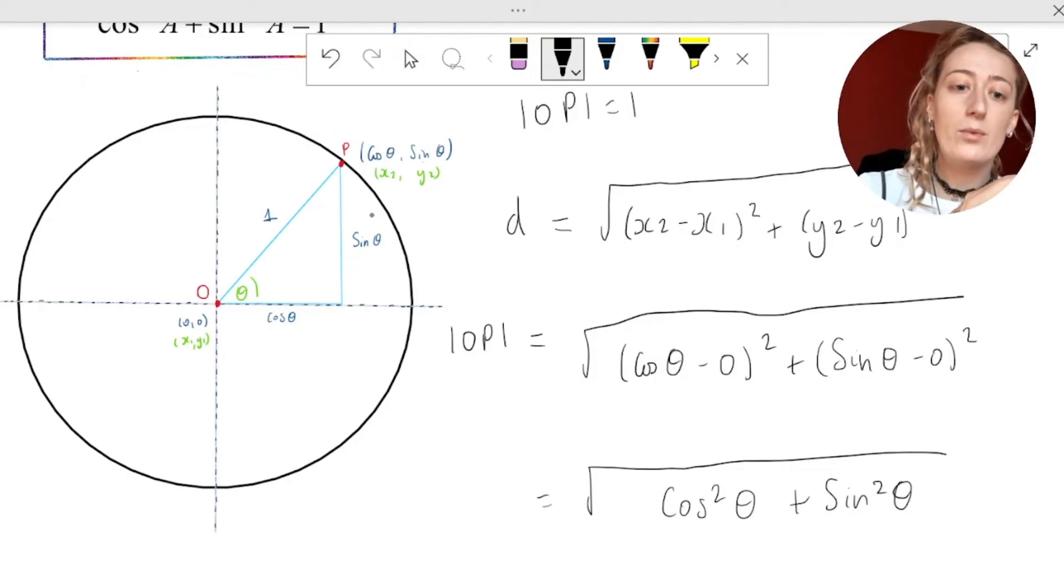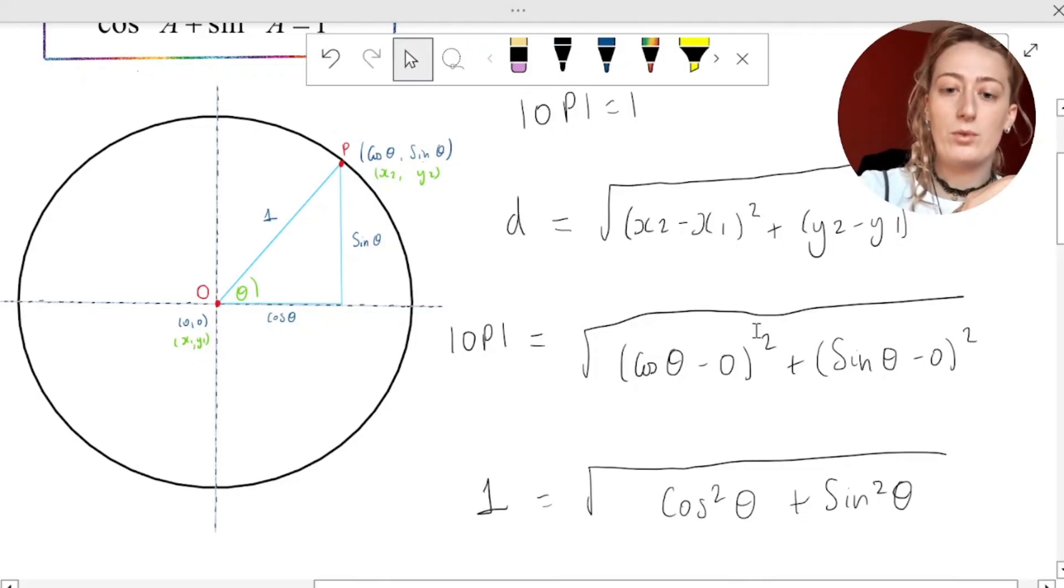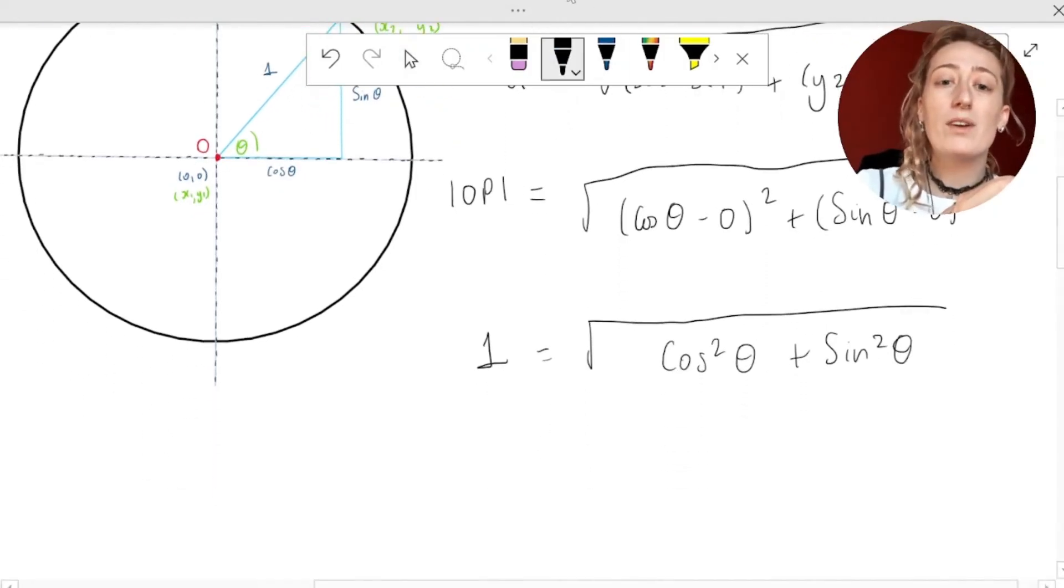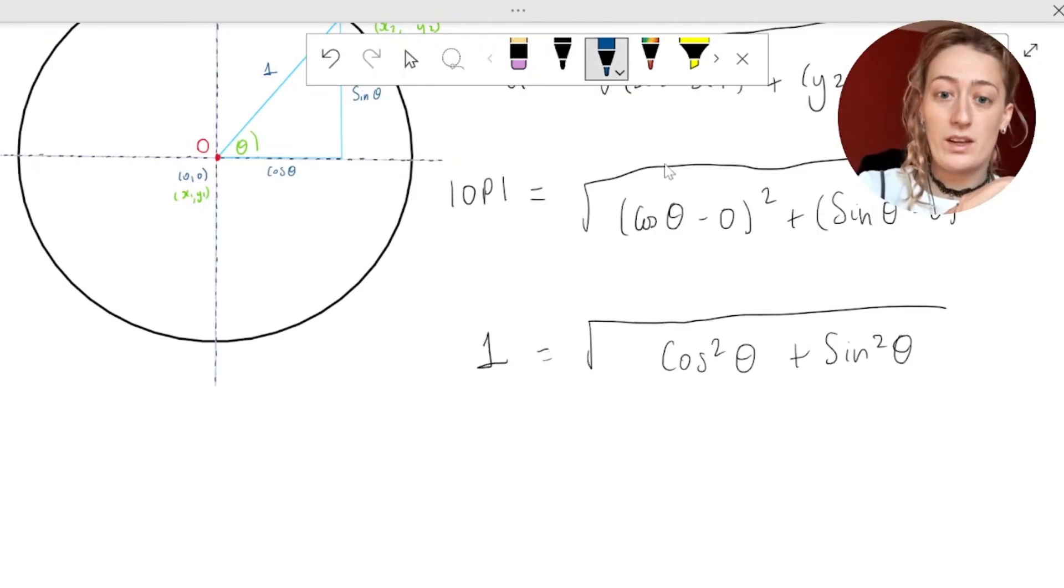Now, O and P, we already know is equal to one, so let's just straight away let that equal to one. Now, we want to get rid of our square root here, and what do we always do to get rid of the square root? We square both sides.